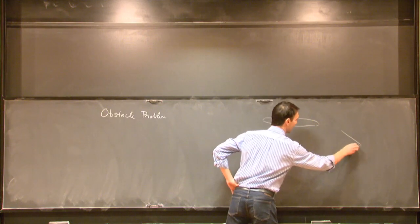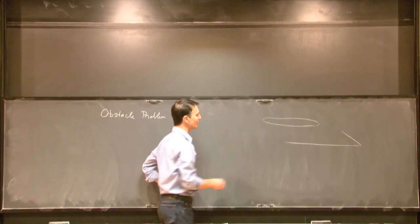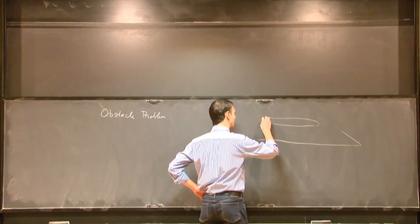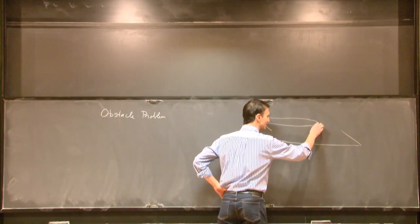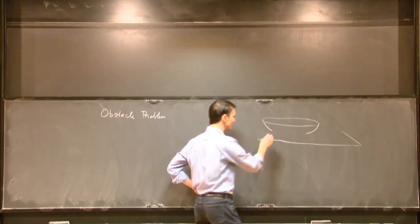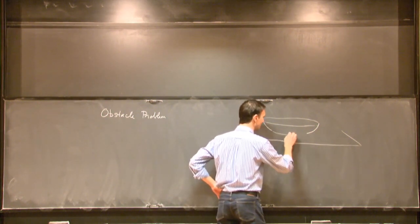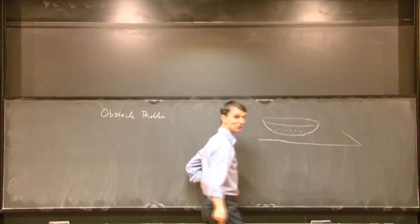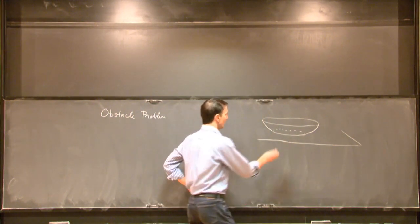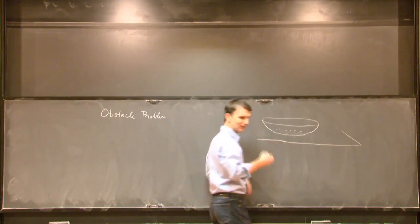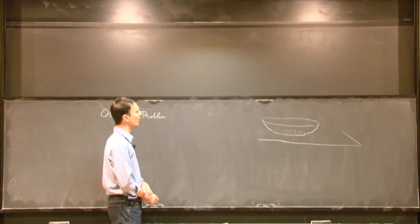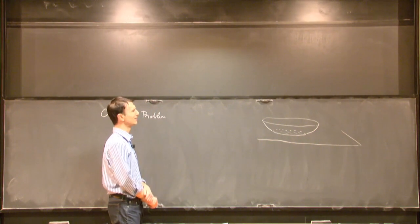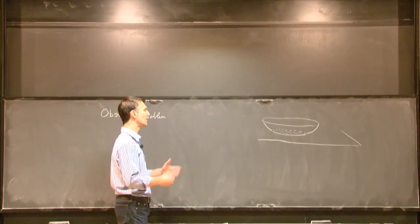The obstacle problem physically: we have a membrane attached to a wire, and a table as an obstacle below. The membrane bends down due to gravity and at some point hits the table, creating a patch. The membrane rests on the obstacle, and at some point should satisfy some equation.